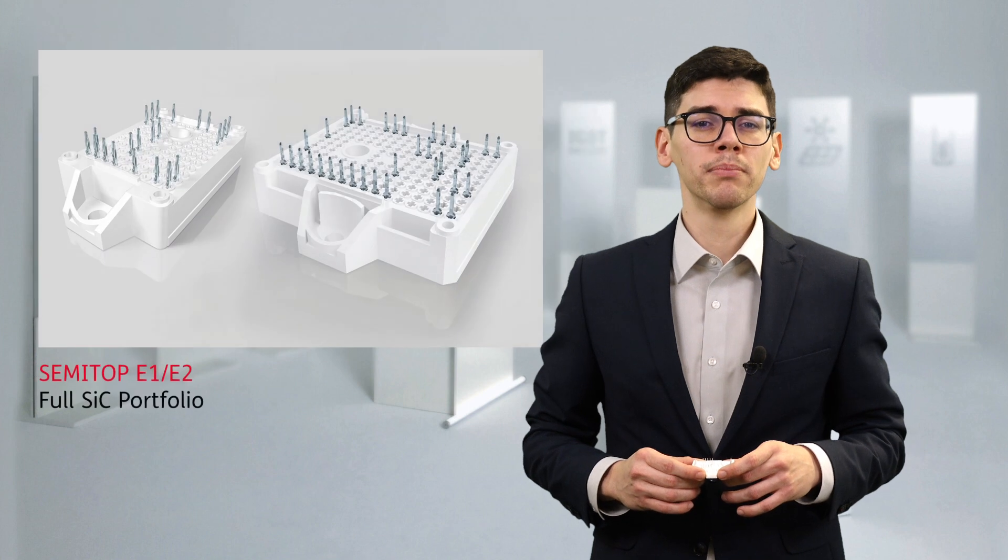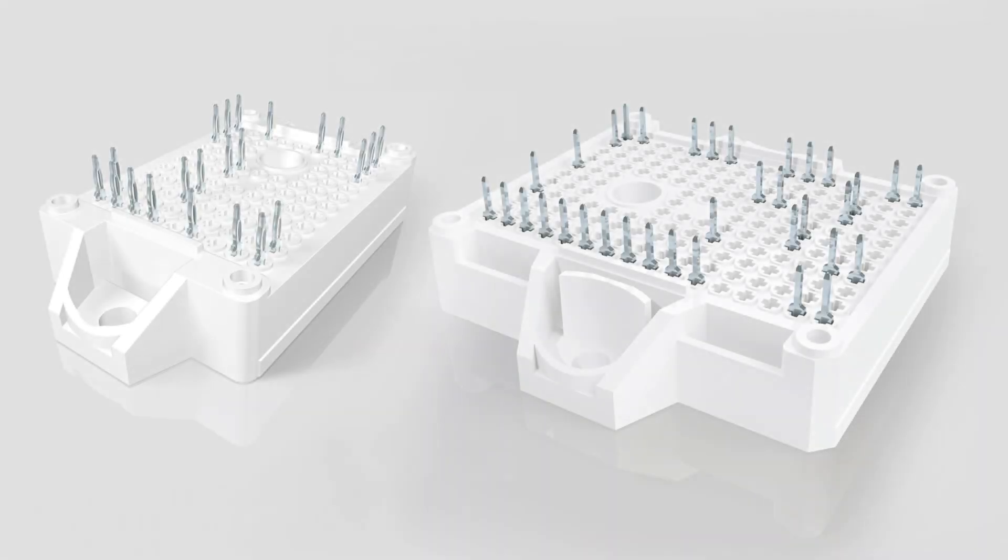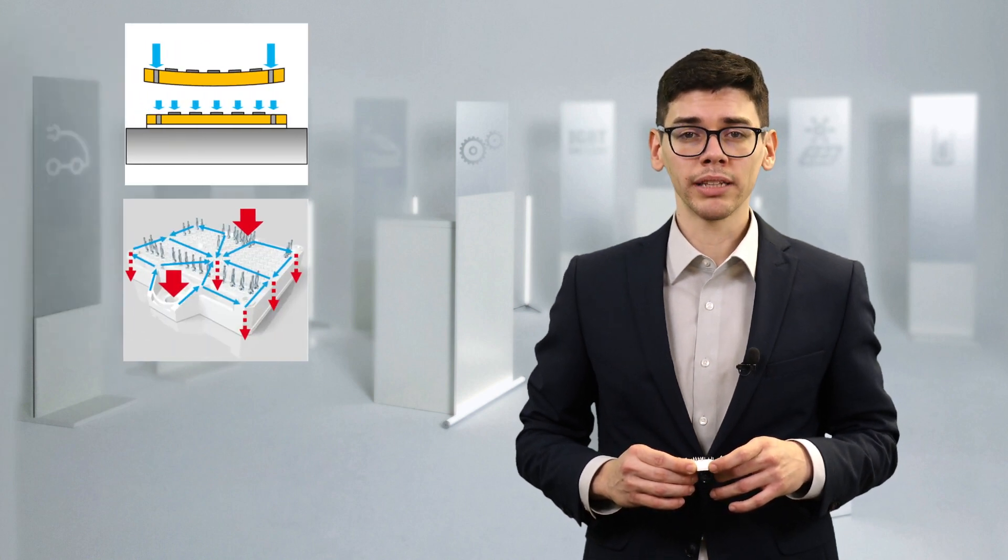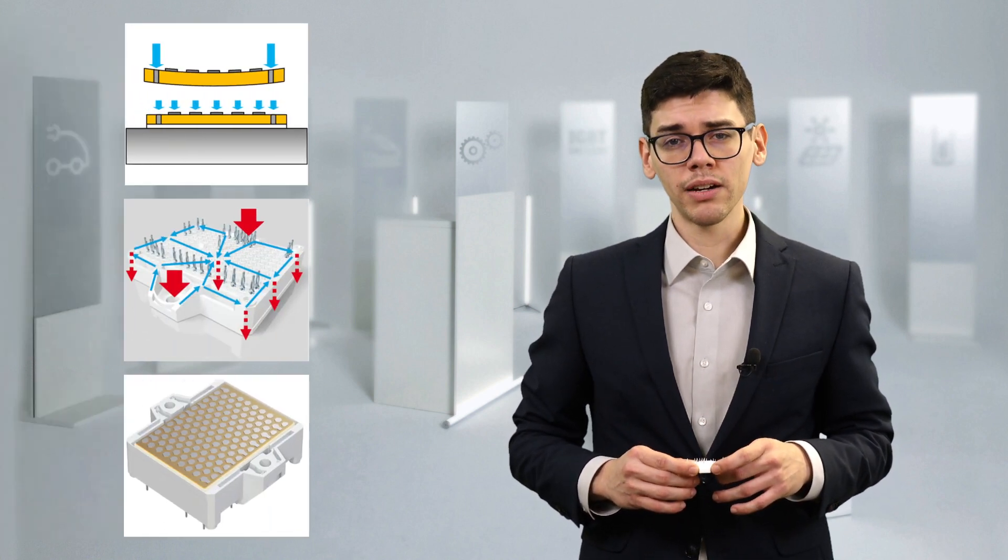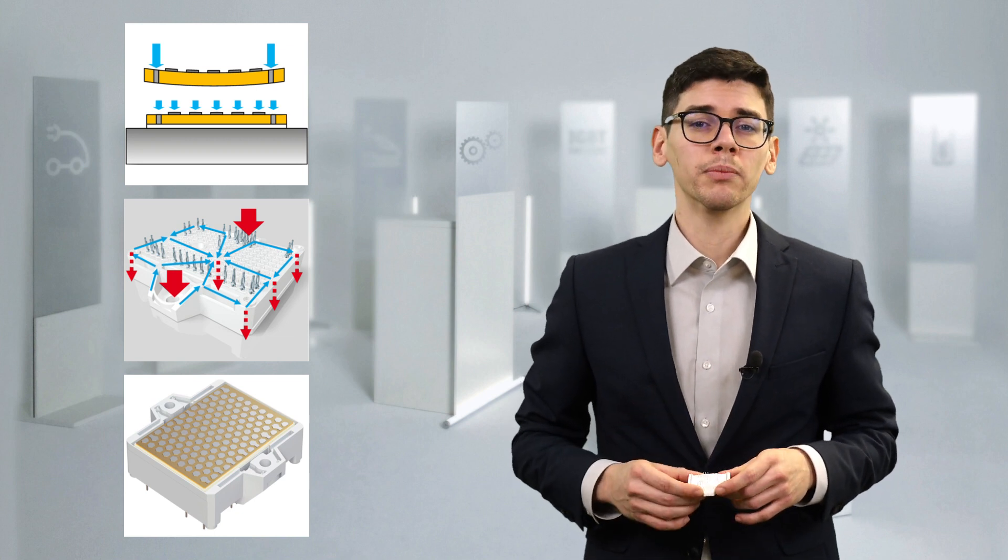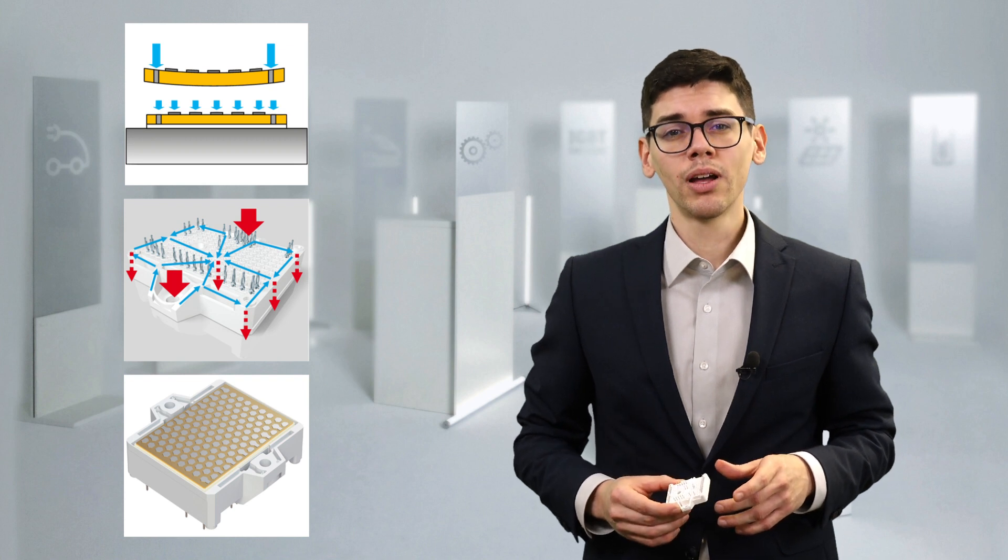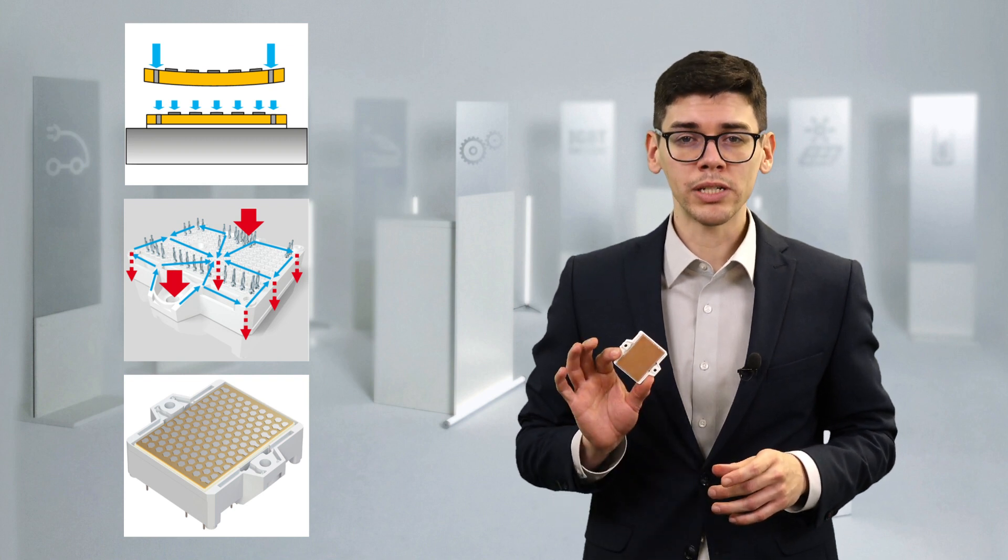In order to get the most out of the silicon carbide, we package it into our Simitop E1 and E2 power modules. Combining DBC geometry, distributed pressure among the housing, and the latest thermal interface material, the Simitop E1 and E2 offer best-in-class thermal resistance from chip to heatsink. All of this without using special ceramics.